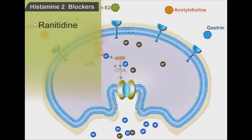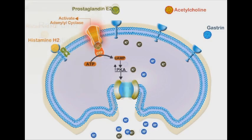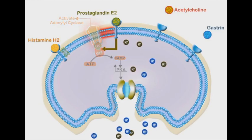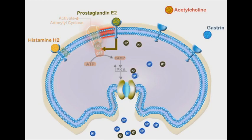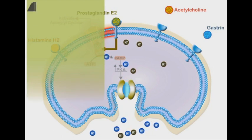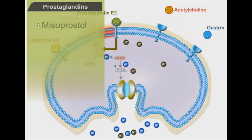Histamine 2 blockers include ranitidine and famotidine. Conversely, prostaglandin E2 molecules inactivate adenyl cyclase enzyme. Thus, prostaglandin E2 decreases proton pump activity and gastric acid secretion. The main example of a prostaglandin agonist is misoprostol.